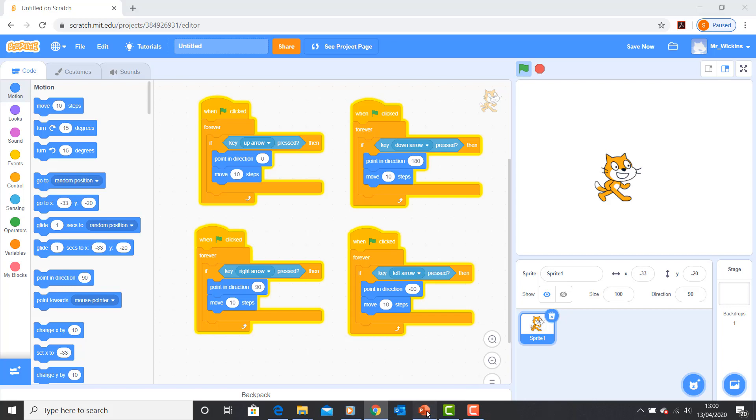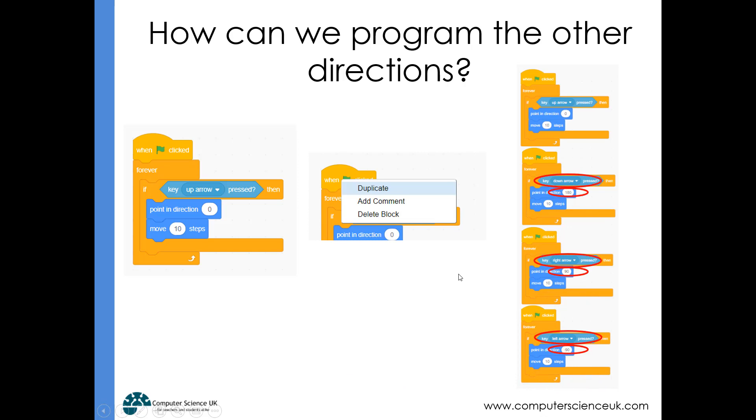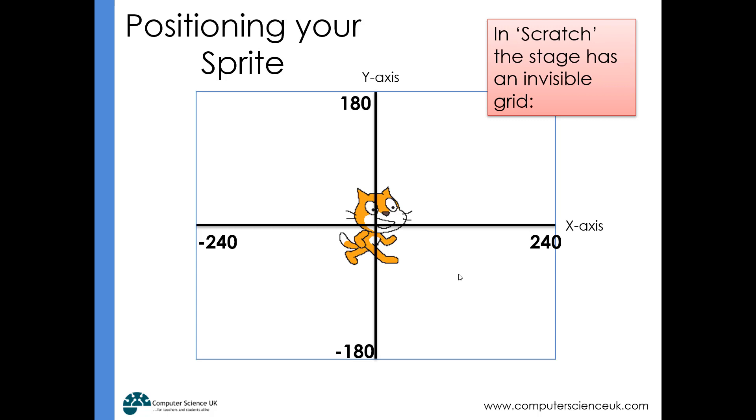Another thing we should be aware of is how we can get our sprite to move automatically. That might be really useful if later we want to produce a baddie object that we need to avoid or shoot down, depending on what we're doing in our game.